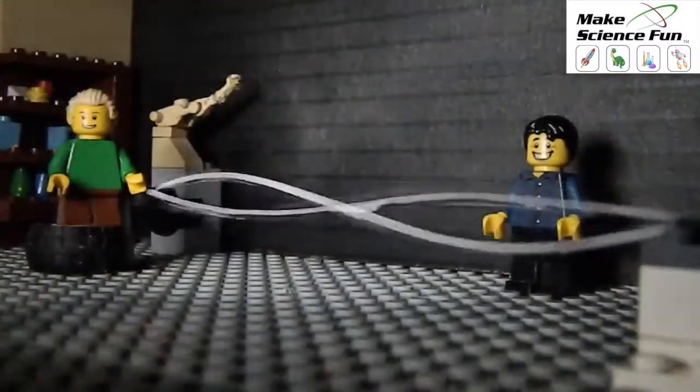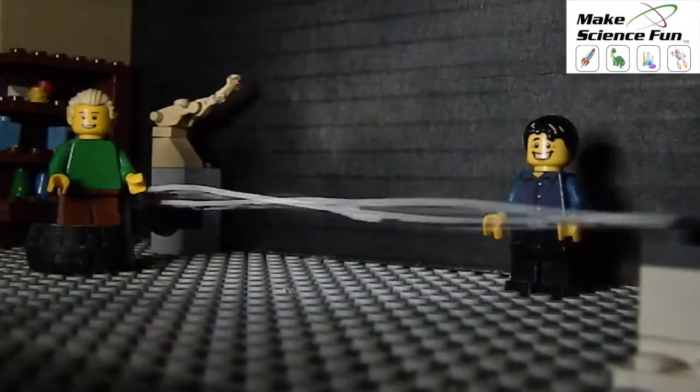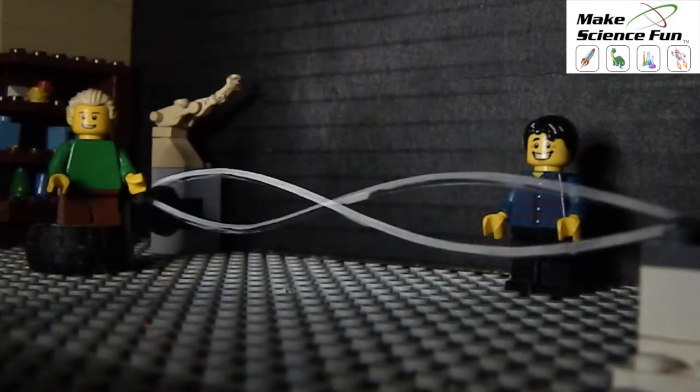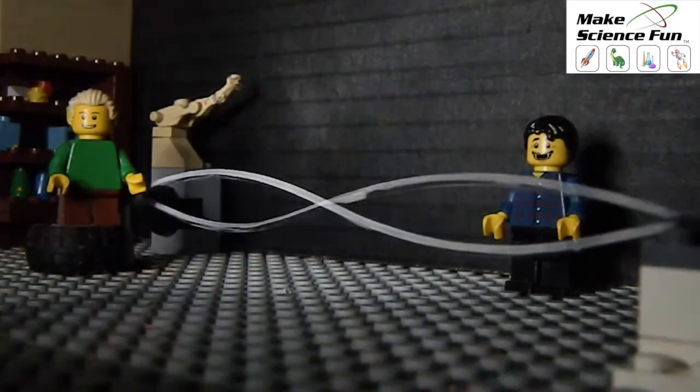Now if I double the frequency of the strobe light, I get two images. It appears not to be moving, but it is really.